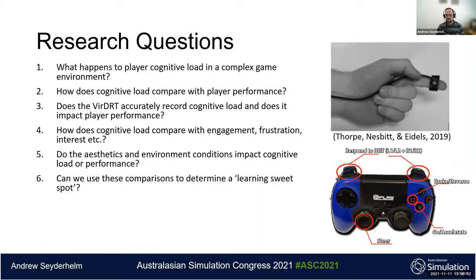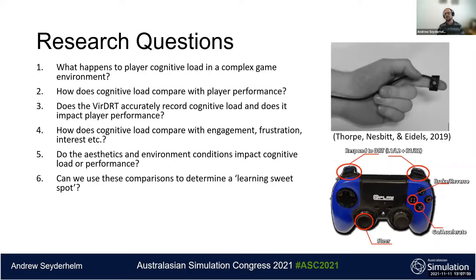From this data we aim to develop a validated toolbox of methods that can be confidently used to affect difficulty in 3D games in specific ways. We're also looking at how cognitive load compares with engagement, frustration, boredom, and so forth. The aim is to understand how performance and cognitive load are affected by a range of in-game real-time variables, ultimately to infer a learning sweet spot with a balance of optimal challenge, cognitive load, and performance — and from this develop a DDA system that enhances training outcomes.